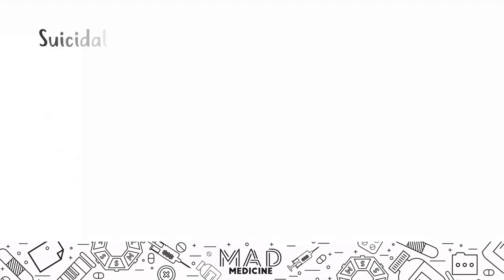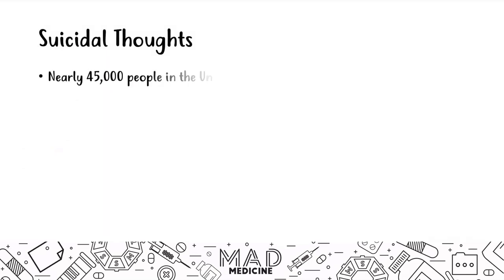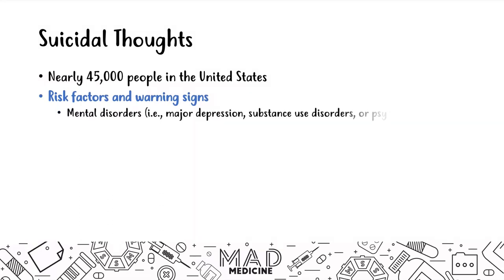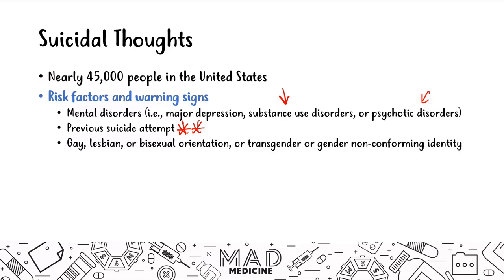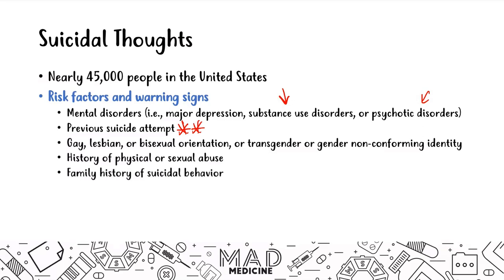The last psychiatric emergency is suicidal thoughts and suicidal tendencies. Nearly 45,000 people in the United States have suicidal thoughts at all times. Suicidal thoughts can occur in mental disorders like major depressive disorder, substance abuse disorders, or psychiatric disorders like schizophrenia. Risk factors include a previous suicide attempt — one of the highest risk factors — as well as being part of the LGBTQ community due to societal factors, having a personal history of physical or sexual abuse, and having a family history of suicidal behavior.